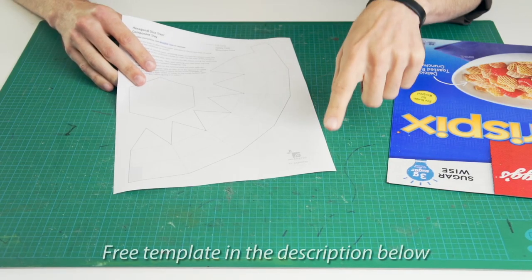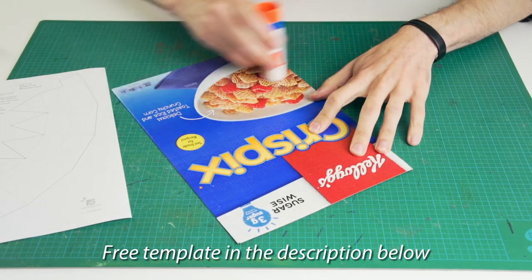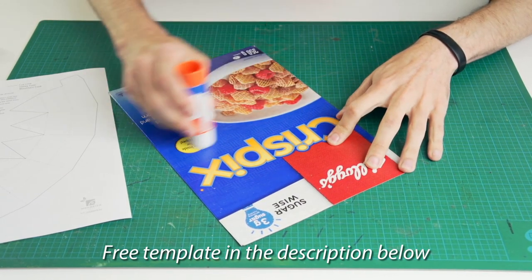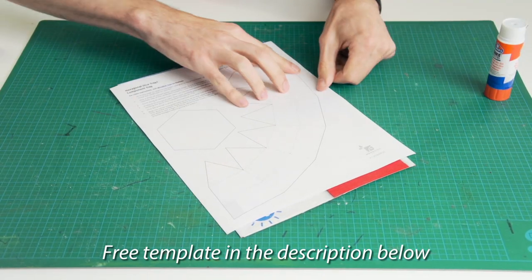To start, go to the link shown below and print out the template on plain paper. Then using spray glue or a glue stick, glue the template onto the printed side of some cereal box cardboard or something of similar weight.